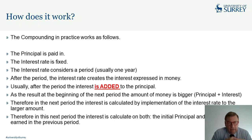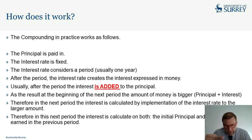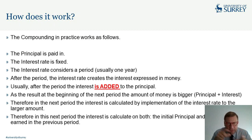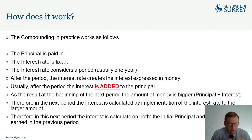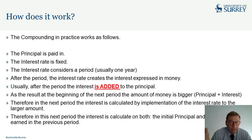Therefore, in the next period, the interest is calculated on the larger amount. The interest is now earned on both the initial principal and the interest earned in the previous period. This is the theory — and also the practice — of compounding.